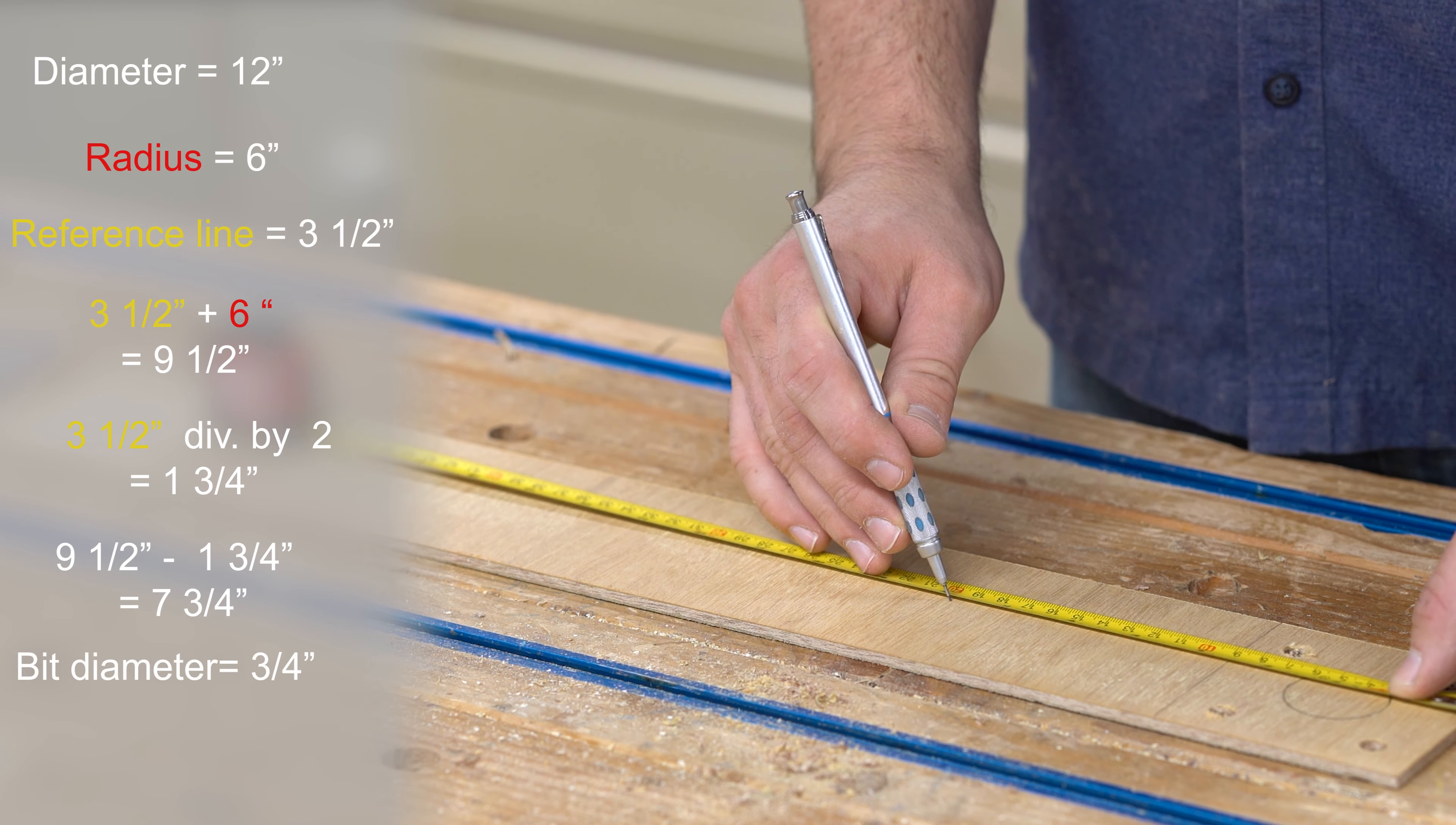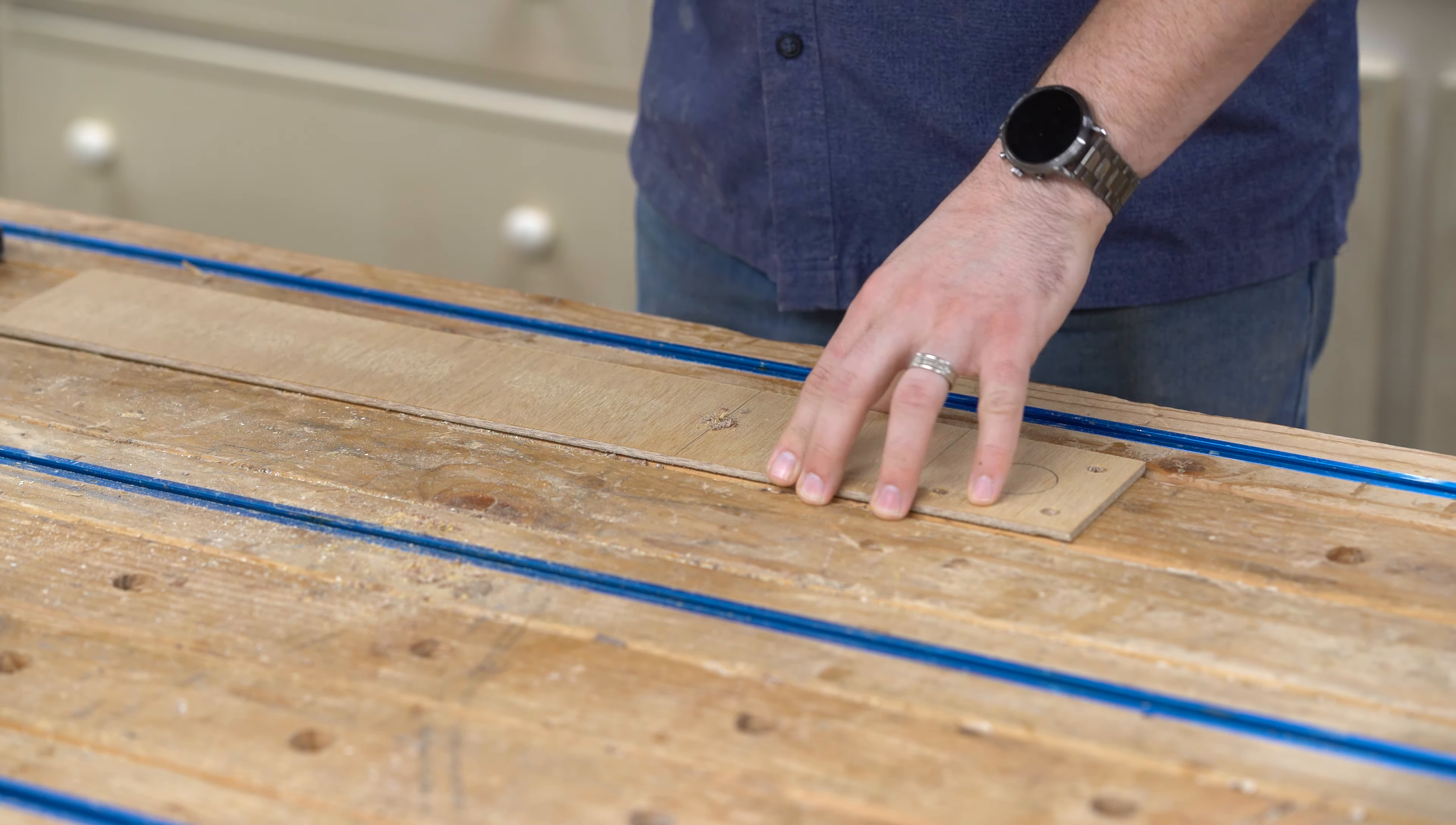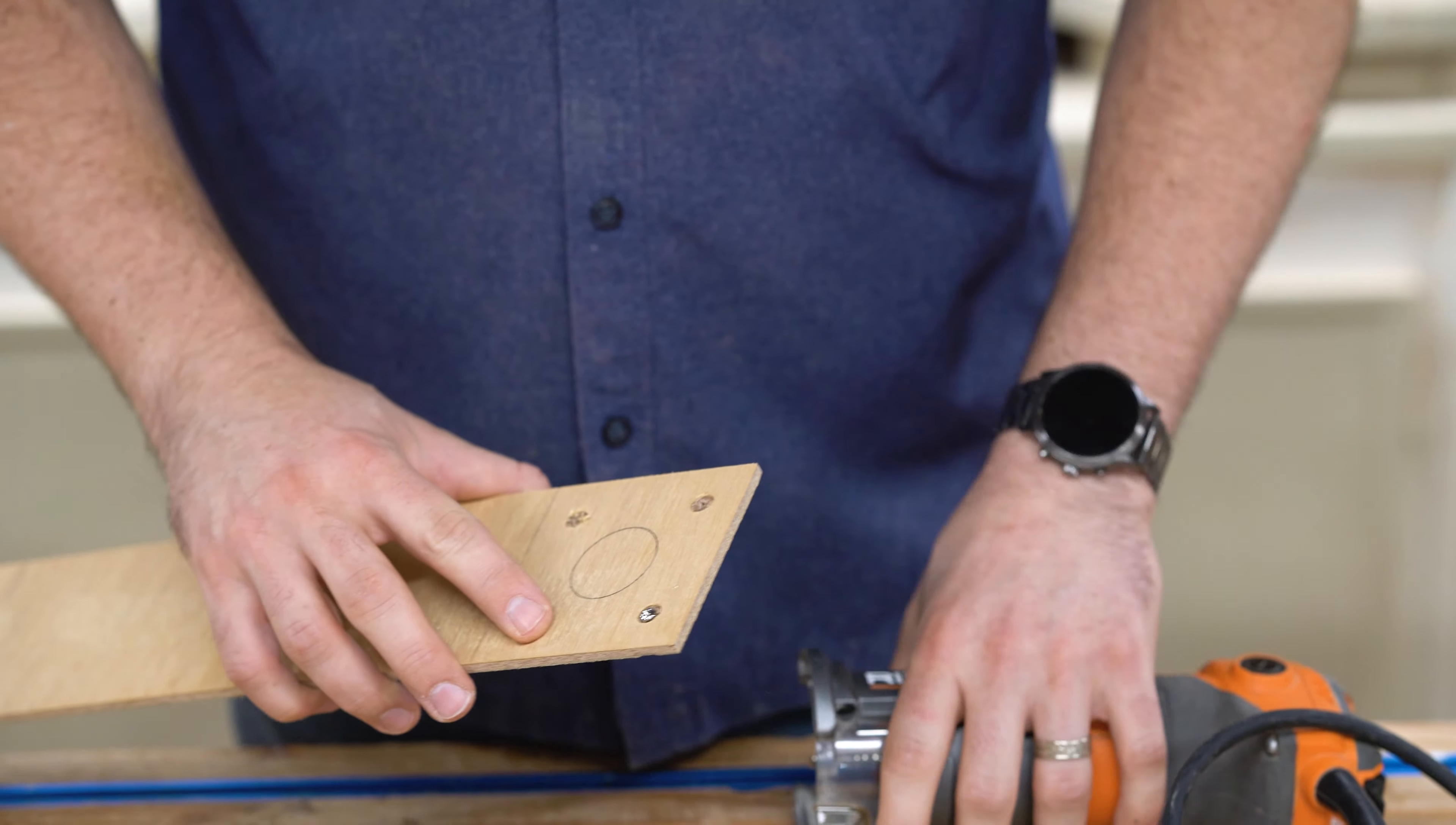My bit is a quarter inch wide, so half of that is one-eighth. Seven and three-quarters plus one-eighth is seven and seven-eighths. Find the center of the plywood at that line, and that's where I'll drill the hole for the pivot. Use a drill bit that is just slightly bigger than the screw you're going to use for the pivot. You want the plywood to rotate around the screw but not wiggle.